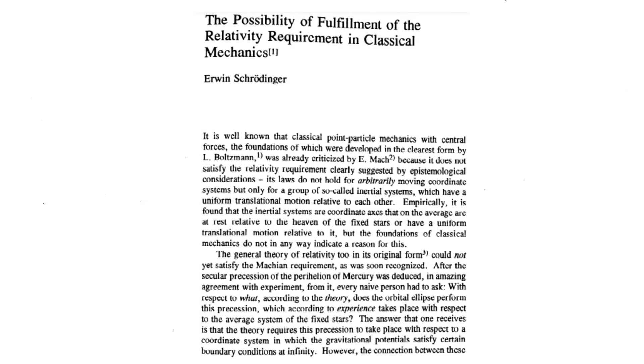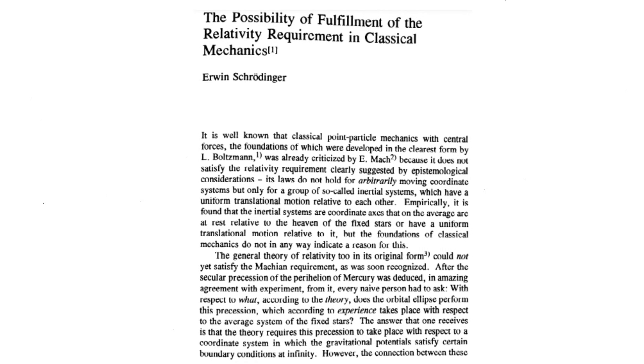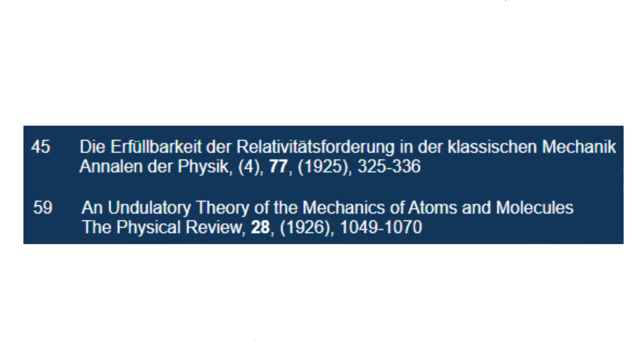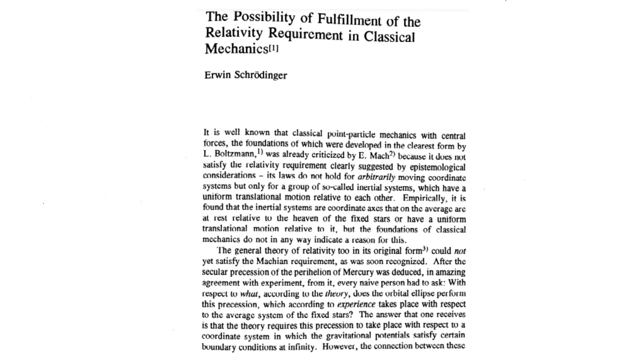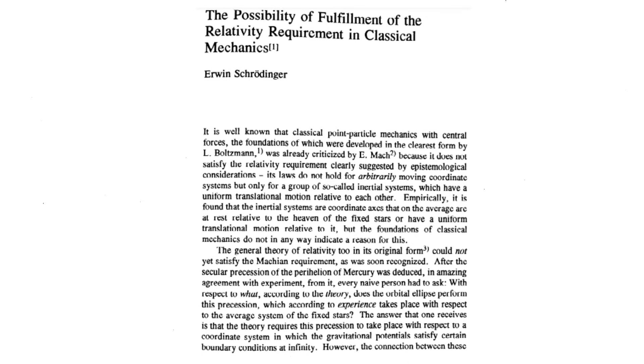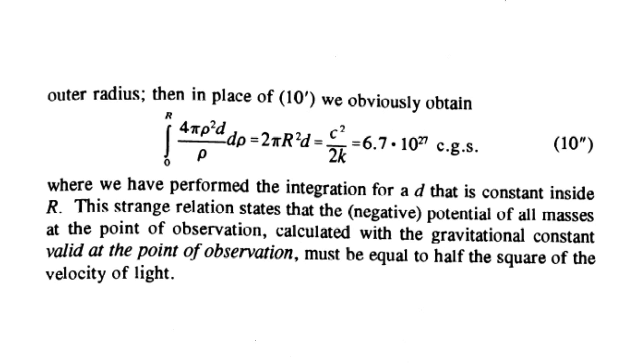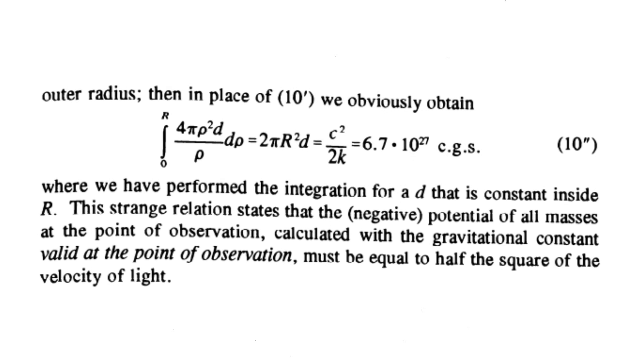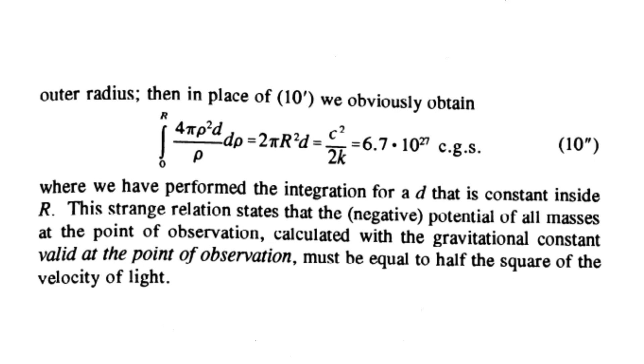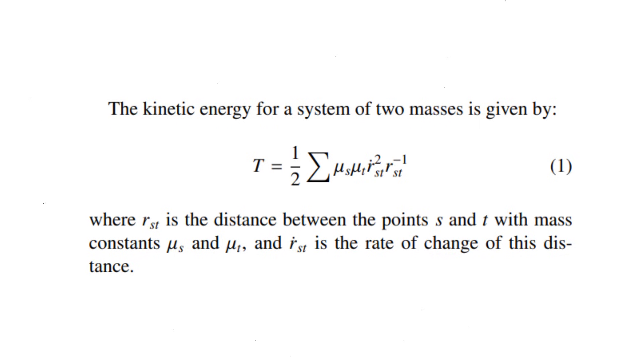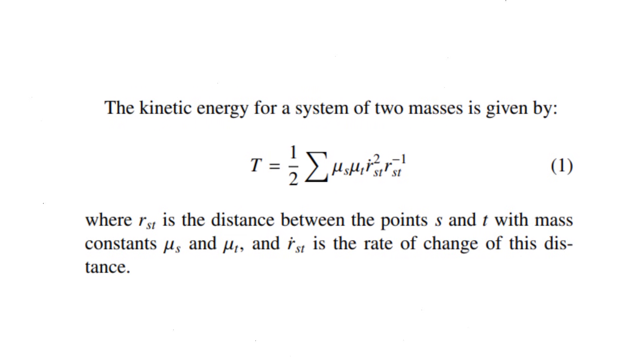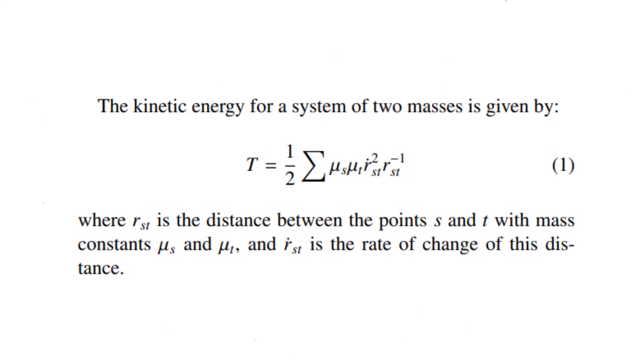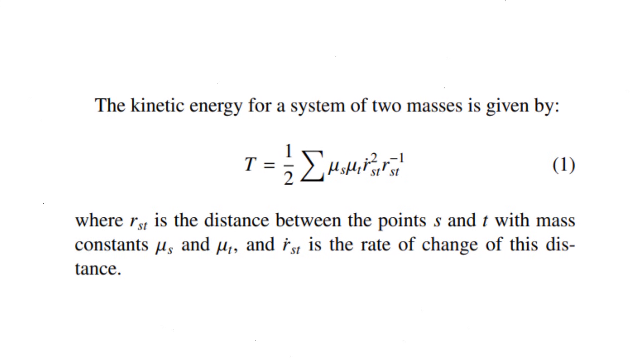Erwin Schrödinger identified in his 1925 paper that general relativity did not fully implement Mach's principle and proposed a relationship between the gravitational potential of distant masses and the speed of light. This remarkable relationship states that the negative potential of all masses at the point of observation calculated with the gravitational constant valid at the observation point must equal half the square of the speed of light. This conclusion was reached by imposing that kinetic energy had an origin in potential-like interaction as other forms of energy, which arise from position or configuration relative to forces.